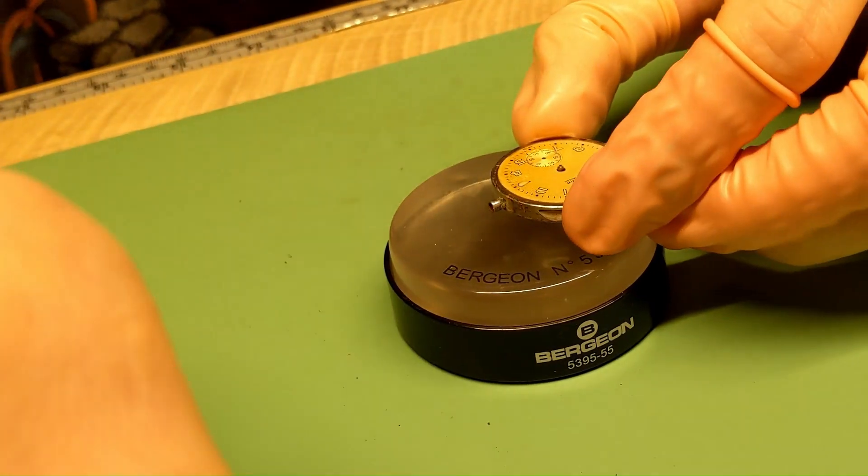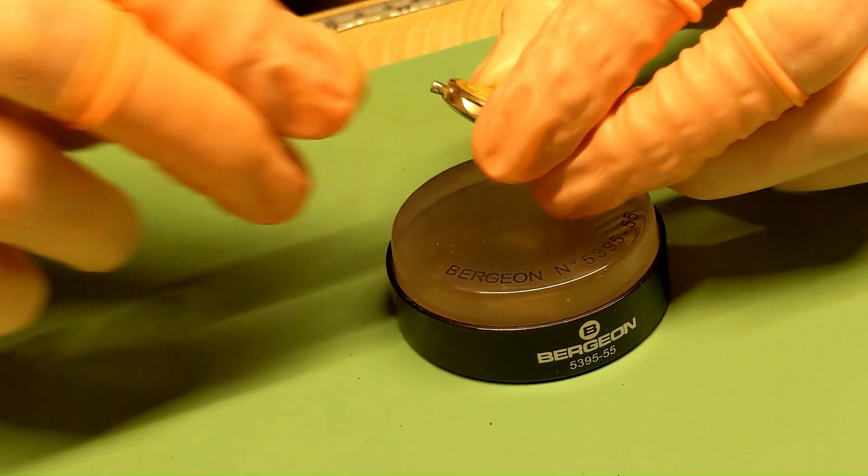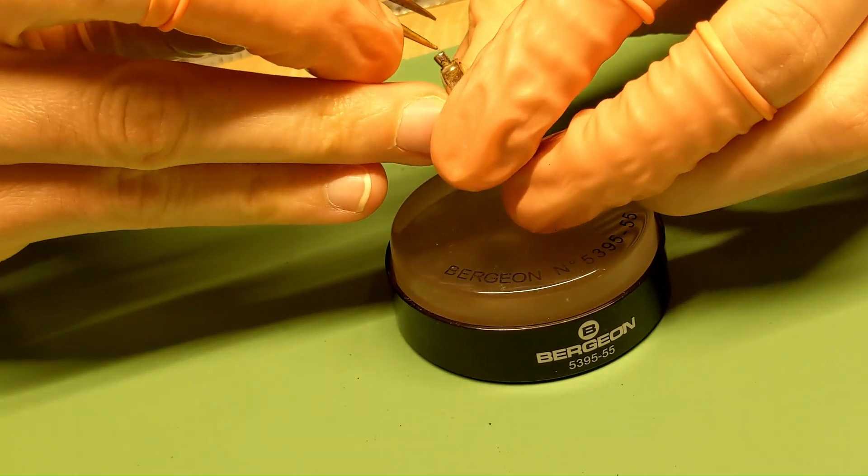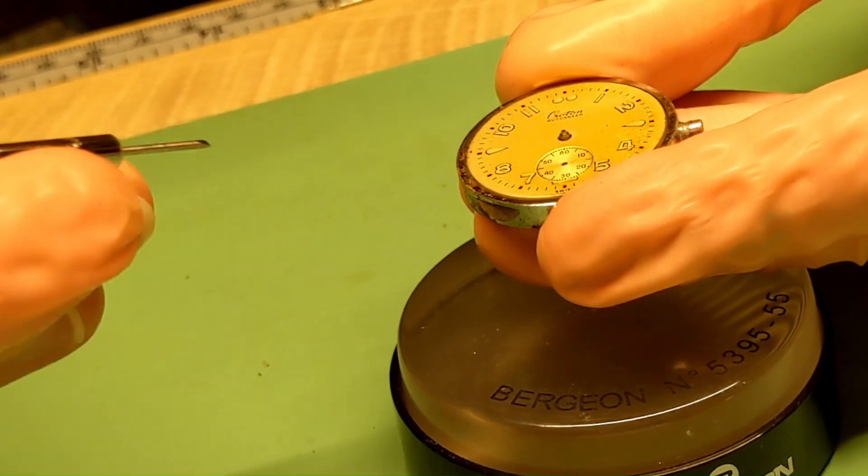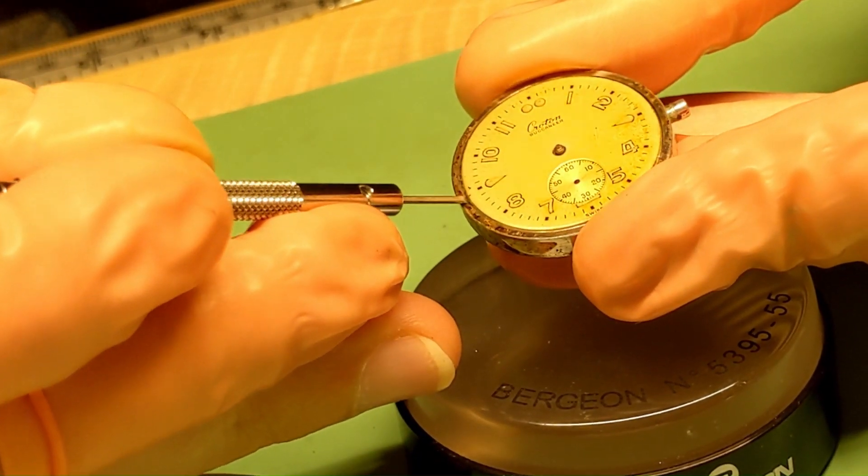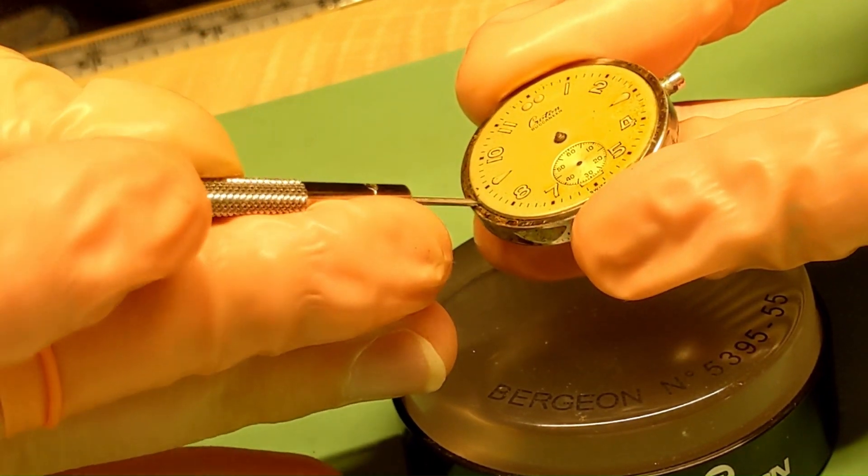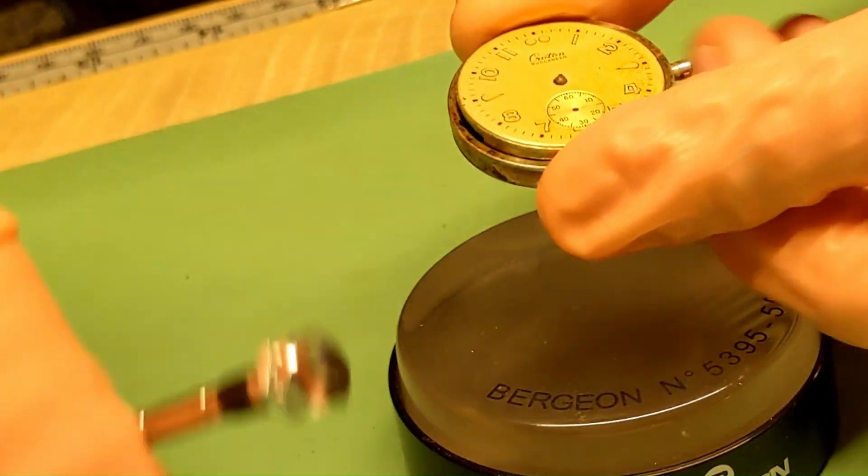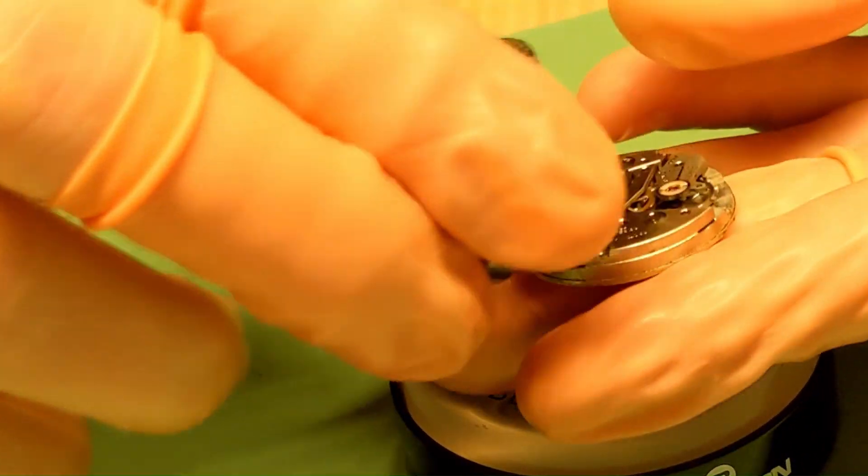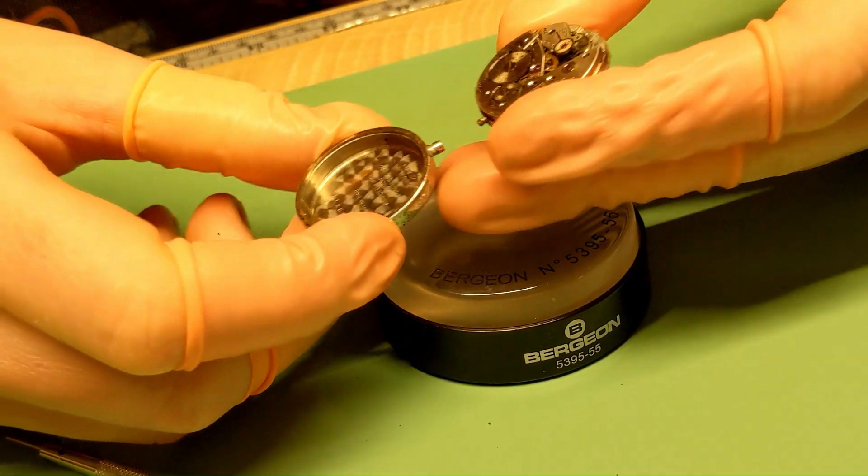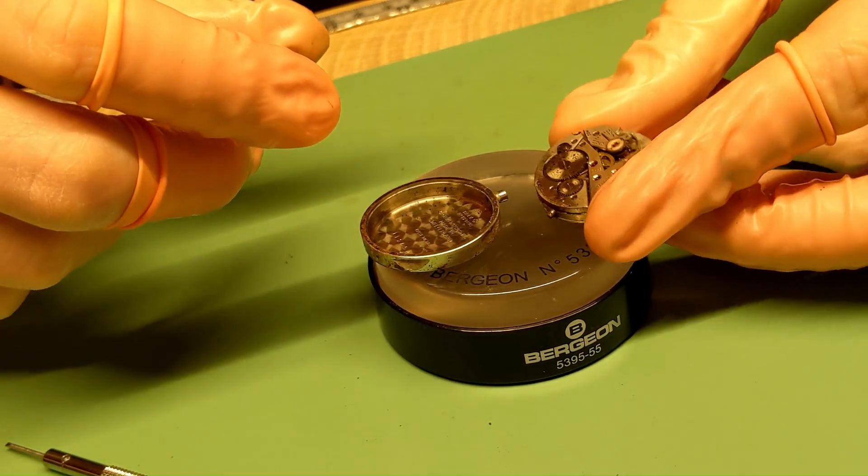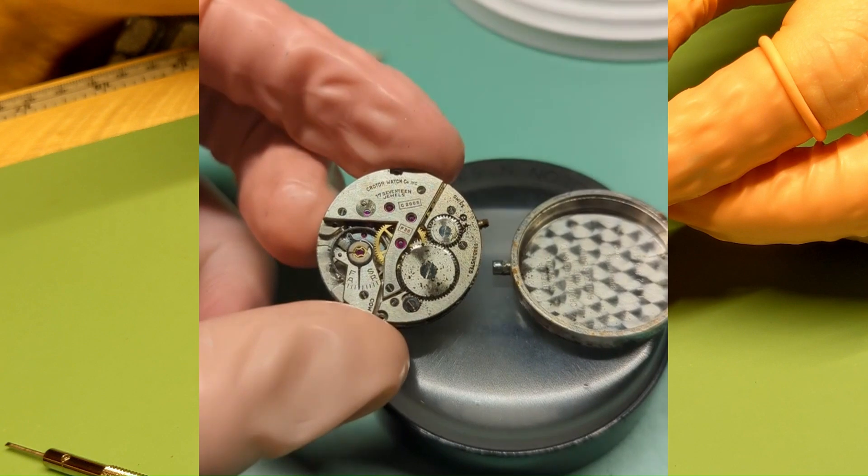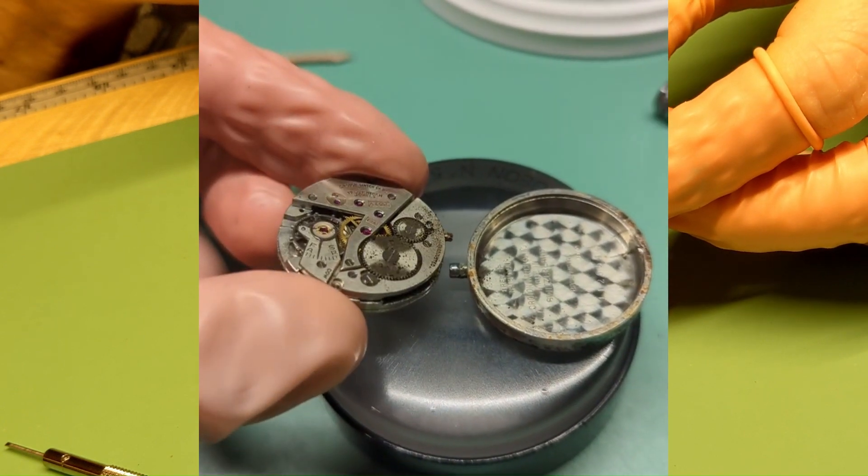Bingo, there you go. That came off smoothly. Now we've got the stem separated. Sometimes I like to push back in that stem since it's in a set position, just to make it easier to get stuff out of the case. You got a little groove here. You can get up underneath the dial and gently lift out. Bingo. There's the movement out of the case.